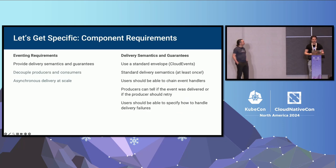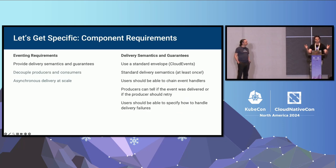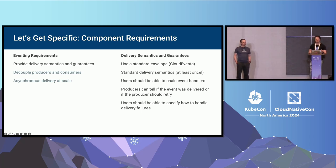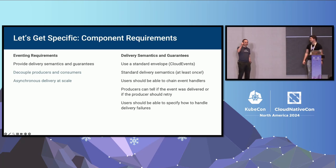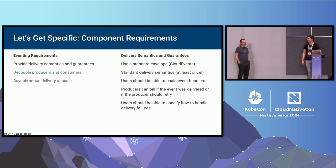On the topic of delivery semantics and guarantees, we wanted to make sure that the envelope for data being delivered was standard — we didn't want to come up with our own Knative-specific event format. As everyone knows from the XKCD: there were 14 competing standards, we went to fix it, now there are 15. We tried to use CloudEvents so that the contract is consistent no matter which underlying transport you use.